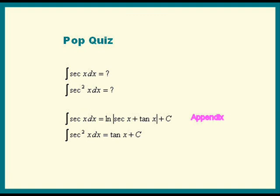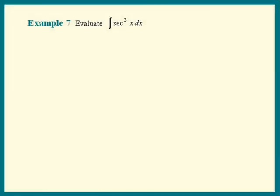So let's get on with the example: evaluate the integral of secant cubed x dx. The tip — pick the hardest part we know how to integrate. That's secant squared x dx. So we're going to think of secant cubed x as secant x times secant squared x. Let dv be secant squared x dx. That means u is secant x.